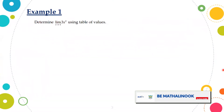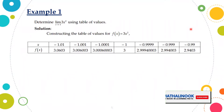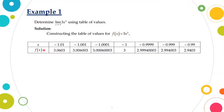Determine the limit of 3x squared as x approaches negative 1 using a table of values. Constructing the table of values for f(x) equals 3x squared, let us set the values of x to be: